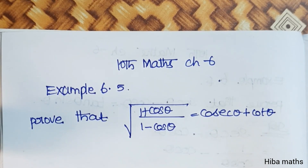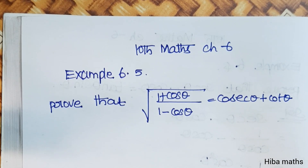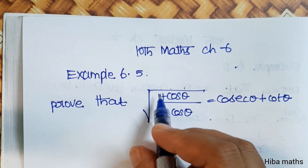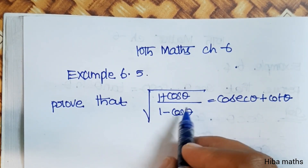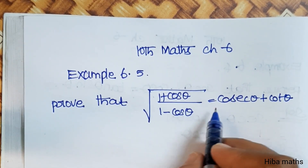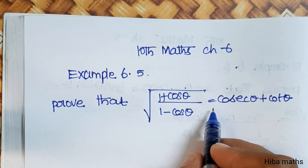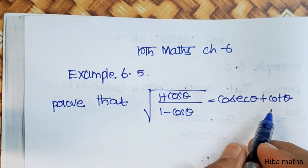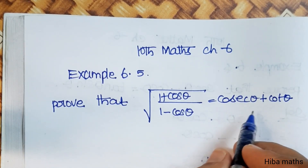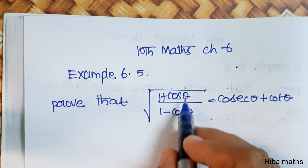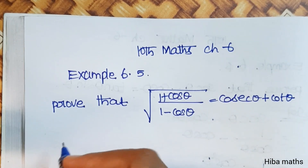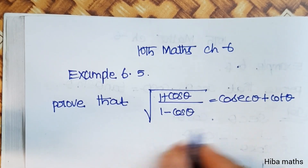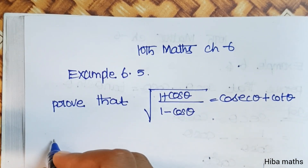Hello students, welcome to Hibamax 10, Chapter 6, Example 6.5. Prove that the square root of (1 plus cos theta) divided by (1 minus cos theta) is equal to cosecant theta plus cot theta. We have to solve the LHS to find the solution.